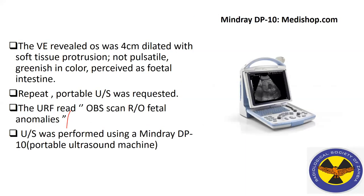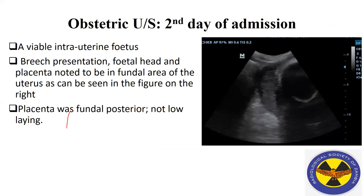As the medical officer continued his assessment, he noted the os was dilated 4 centimetres. He also noted soft tissue protrusion, noted as greenish in color, perceived as fetal intestine. A repeat portable ultrasound scan was requested; the request form read: obstetric ultrasound, query fetal anomalies. A portable Mindray TP10 ultrasound machine was brought to the ward to perform the scan.